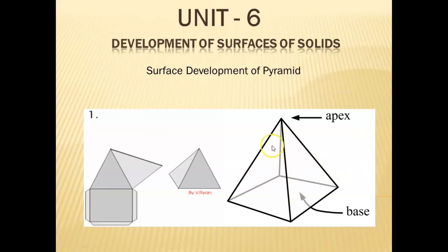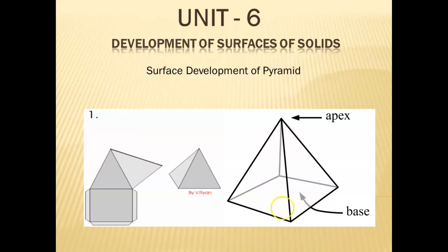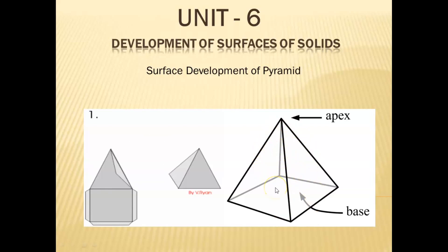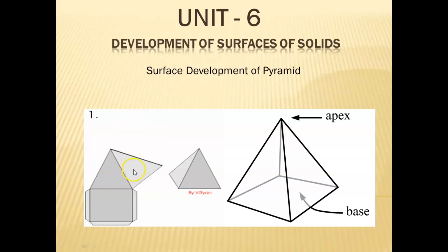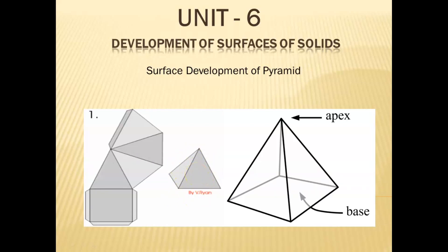In the case of a pyramid, you will find all the lateral surfaces as triangles and the base as a polygon. If it is a pentagonal pyramid, the base is a pentagon and there are five lateral surfaces — five isosceles triangles. If it is a hexagonal pyramid, you will find a hexagonal plane at the base and six isosceles triangles as lateral surfaces. In the animation, when you develop a lateral surface of the square pyramid, you will find four triangular faces. For the pentagon, you will find five lateral surfaces; for the hexagon, six lateral surfaces.